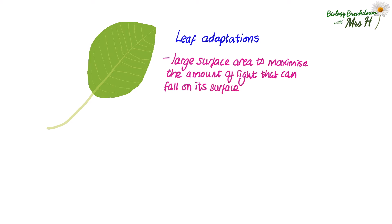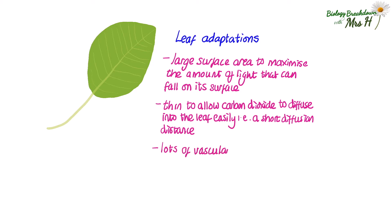Photosynthesis mainly happens in the leaves. A leaf is a plant organ and it is adapted well to carry out photosynthesis as efficiently as possible. It has a large surface area which helps to maximize the amount of light that falls on its surface. It is thin. This allows carbon dioxide to diffuse into the leaf easily, in other words a short diffusion distance for carbon dioxide. And it has a lot of vascular tissue, some people call that veins, which carry water and minerals towards the photosynthesizing cells.